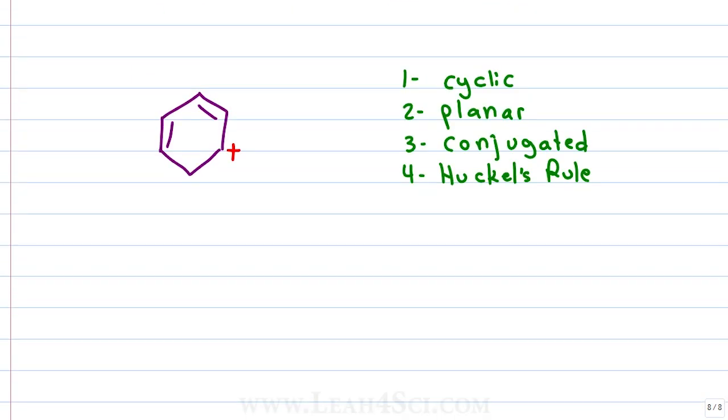This next example looks a little scary at first. Just don't let that positive charge scare you, follow the checklist as you would with anything else. Is the molecule cyclic? Well yes it is, it's a hexagon just like benzene. Is the molecule planar?